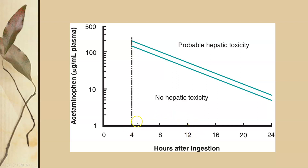If at four hours the levels are above about 100 micrograms per mL of plasma, you can have probable hepatic toxicity. If it is below that, the patient should be able to clear it just fine. After 12 hours, the threshold is more like 50 micrograms per mL — above 50 you can see hepatic toxicity, below 50 no hepatic toxicity. Knowing when the patient took the medicine is really important.